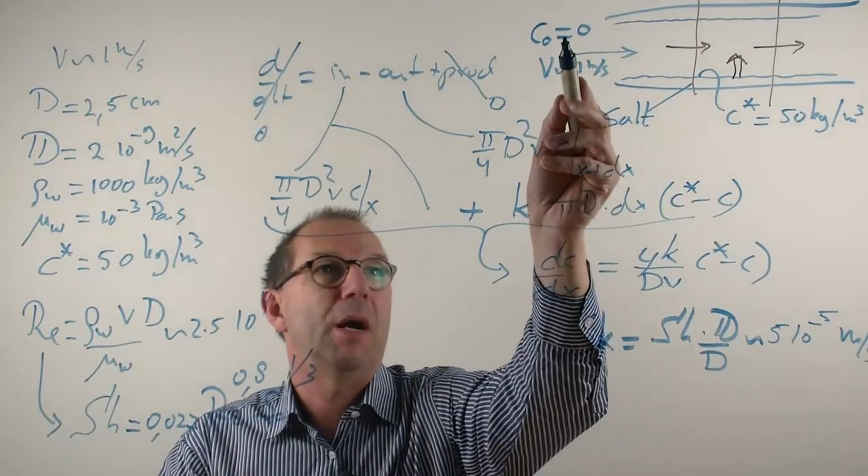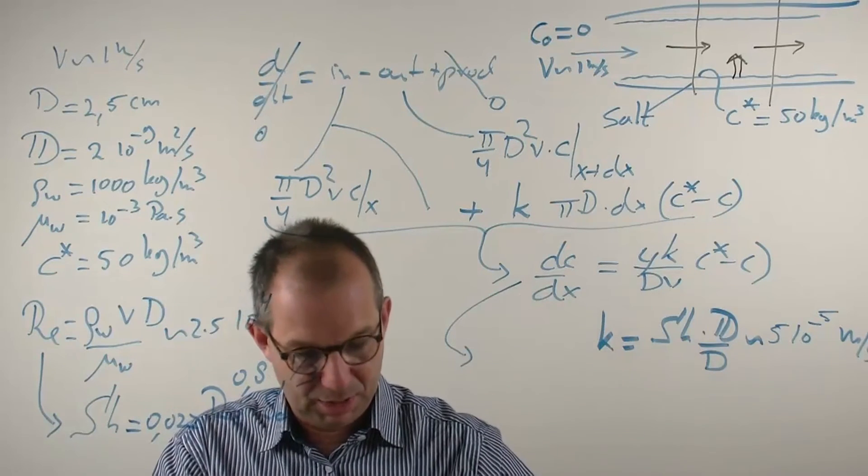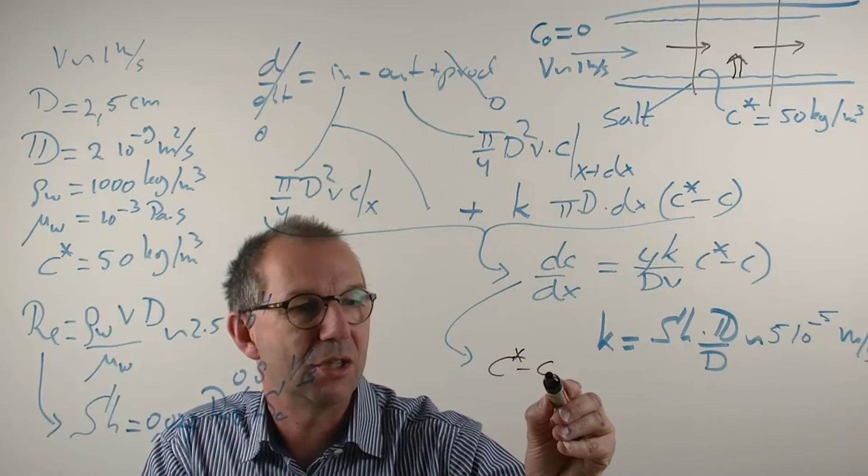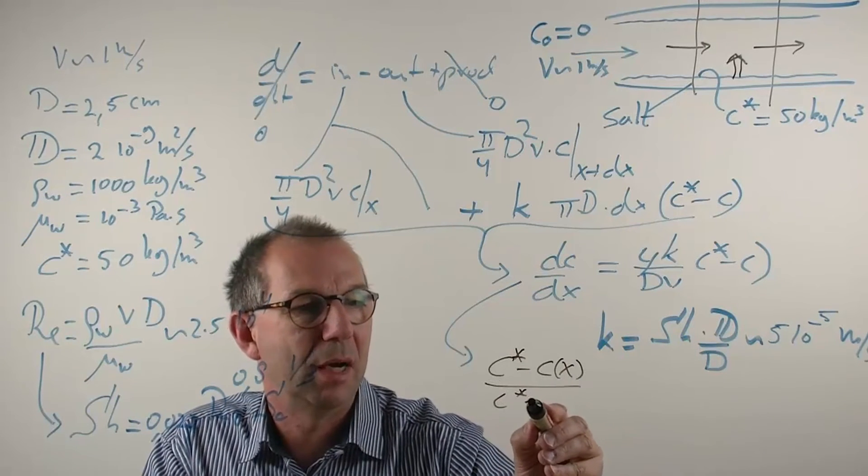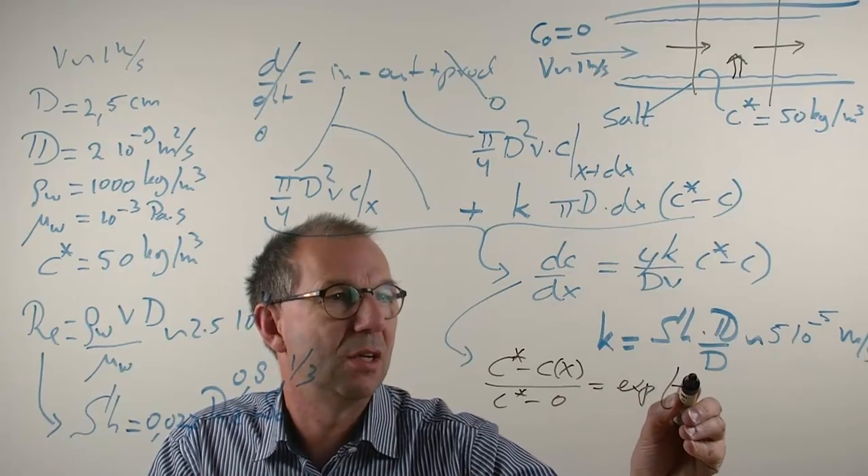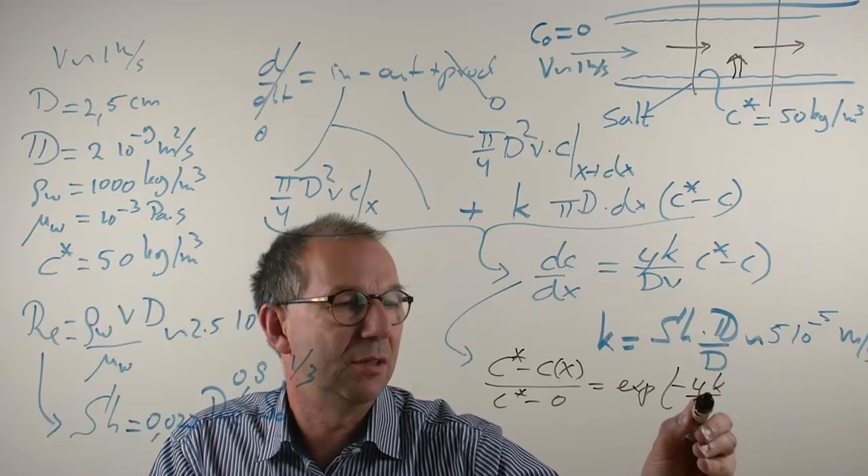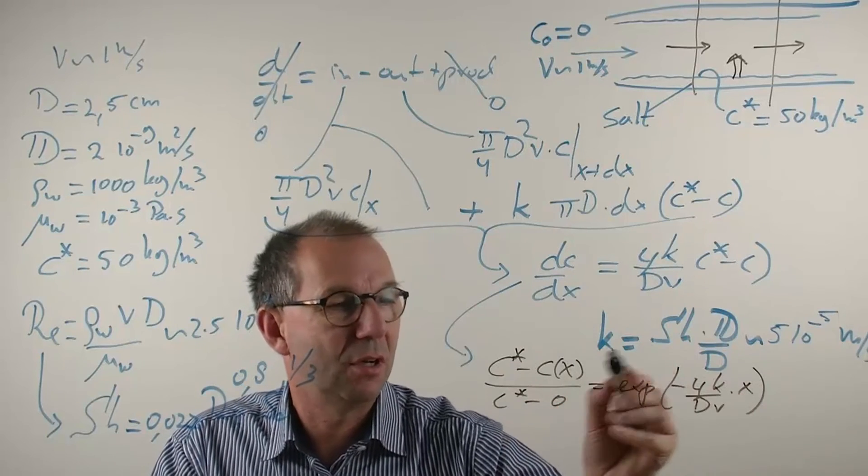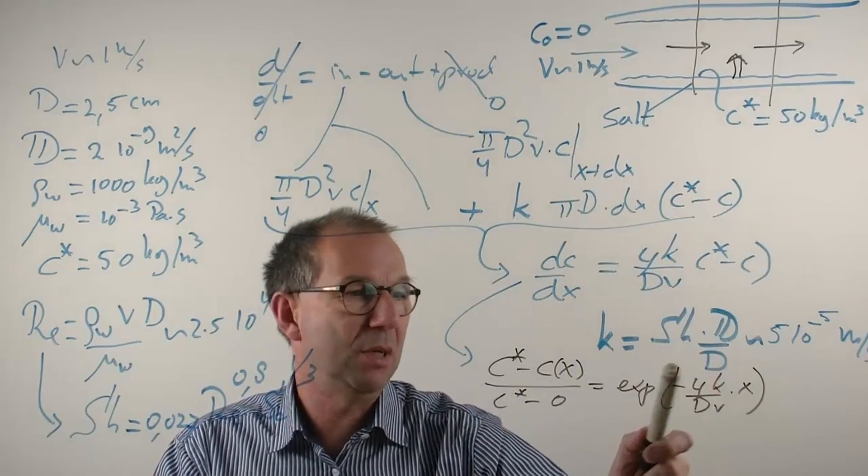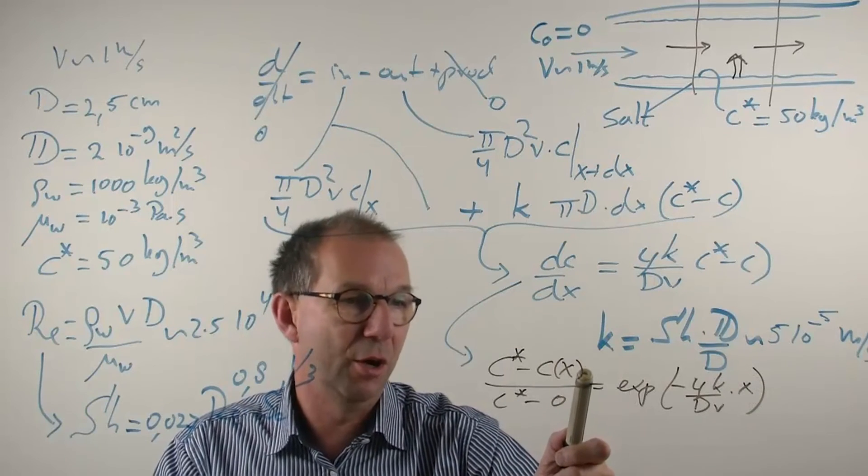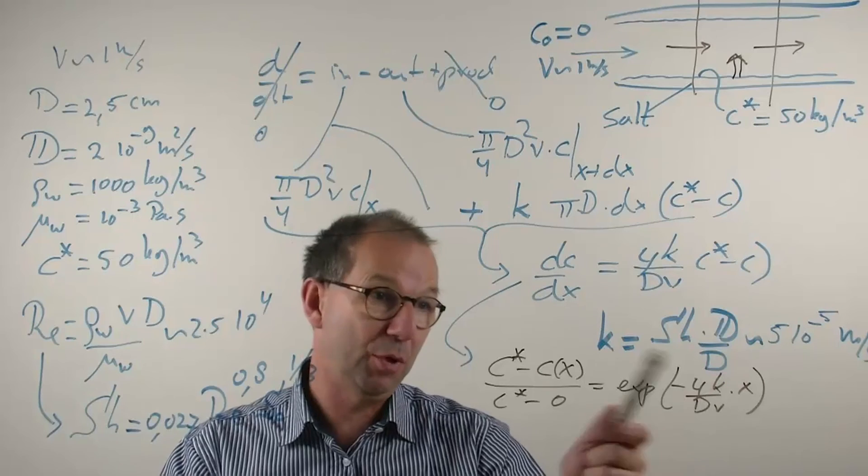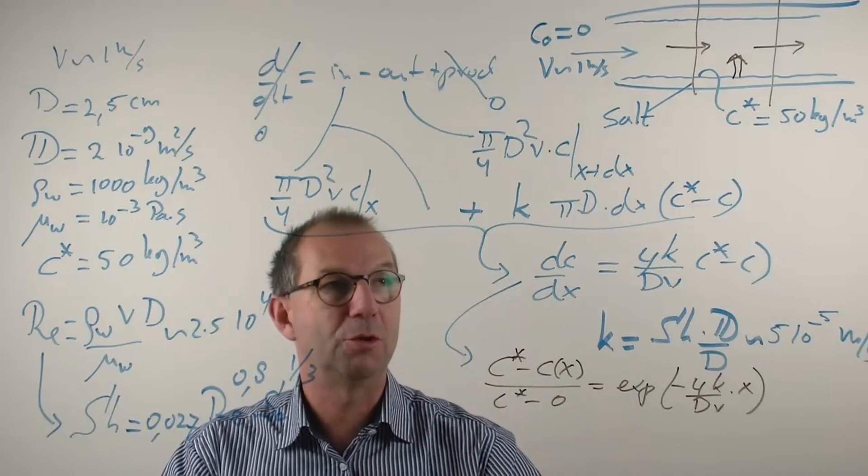Now I can solve this equation with a given boundary condition that c at the beginning equals 0. And I get something like, depending on how you want to write it, c star minus the c that we're looking for at position x over c star minus the inlet which is 0 is an exponent of 1 minus 4k/dv times x. And this gives us the evolution of the concentration. If you put in numbers you will see that if the pipe is 10 meters this concentration is going up only slowly. After 10 meters it's only 4 kg per cubic meter. So the driving force is still the same. If you put in 100 meters you will find that this concentration becomes appreciable compared to the driving force and the process down the line slows down.